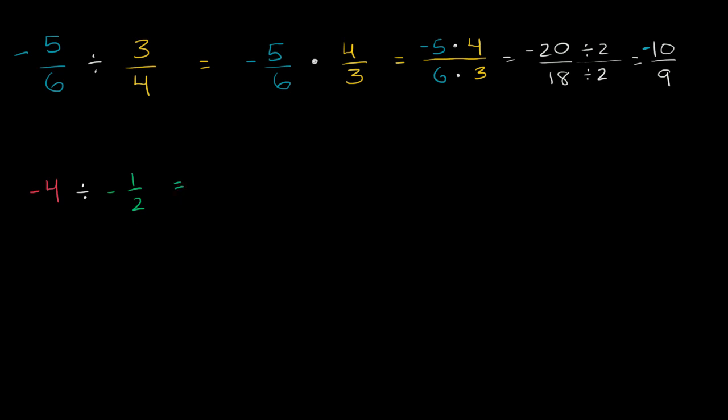So this is going to be equal to negative 4. And instead of writing it as negative 4, let me just write it as a fraction so that we are clear what its numerator is and what its denominator is. So negative 4 is the exact same thing as negative 4 over 1. And we're going to multiply that times the reciprocal of negative 1/2. The reciprocal of negative 1/2 is negative 2 over 1.